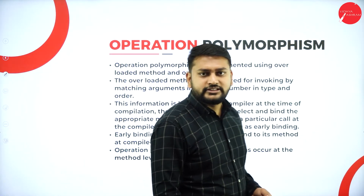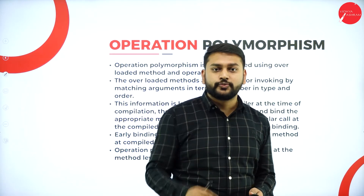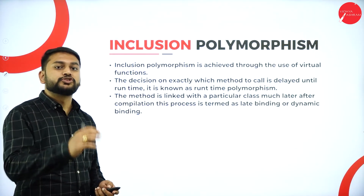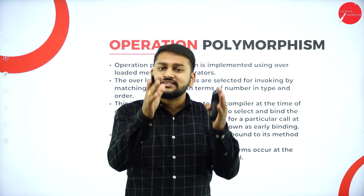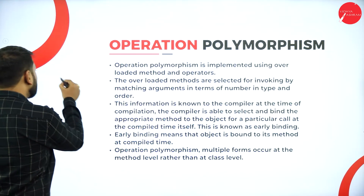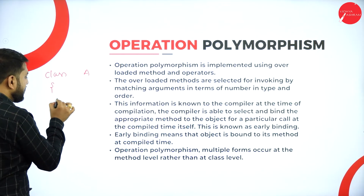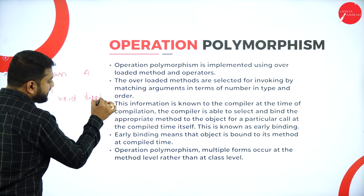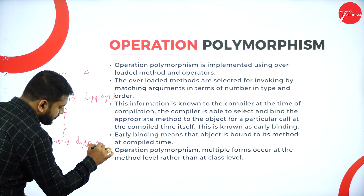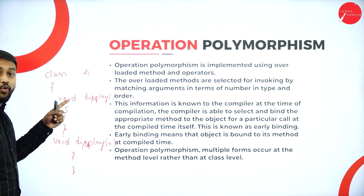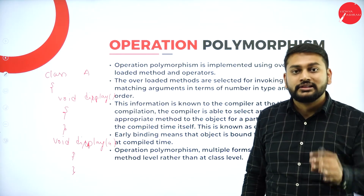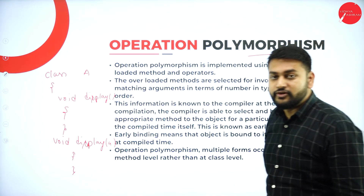Moving on to polymorphism. We have two types: operational polymorphism and inclusion polymorphism. For operational polymorphism, I will have the same method name with multiple methods but different numbers and types of parameters. For example, in class A, I can have void display with no parameter and another void display with one parameter. Having more than one method with the same name but different parameters is called operational polymorphism.